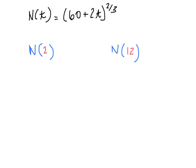So for the actual number of viewers, I go back to the original function. I'm going to plug in 2 and raise 64 to the 2/3 power. When I plug 2 in here, I just get 60 + 4. 64 to the 2/3 is 4 squared, which is 16. So this is 16 million viewers.